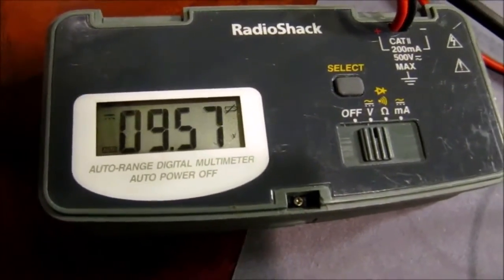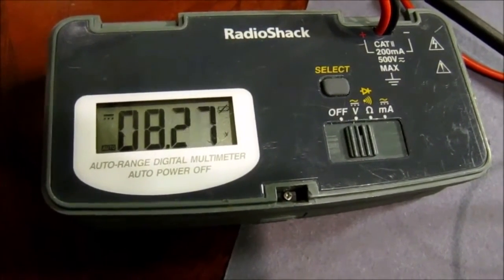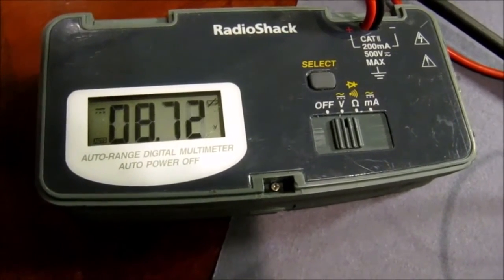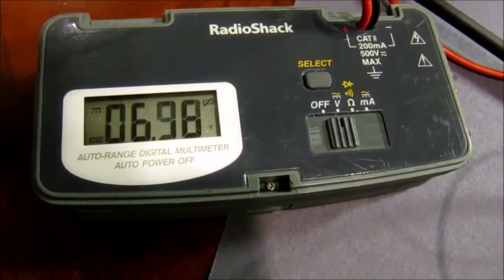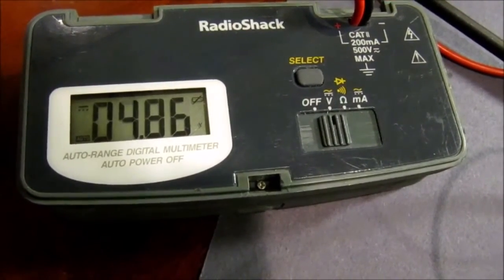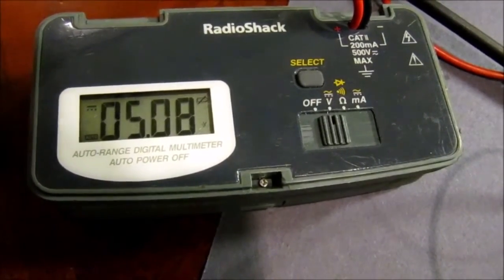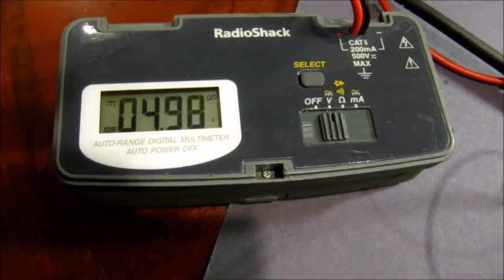So what I'm going to do is adjust the variable potentiometer to get me 5 volts. Turning it down... Oops, we overshot a little bit. We're now at about 5.1 volts. Now we're going to plug the phone in and see what happens.